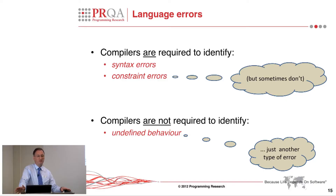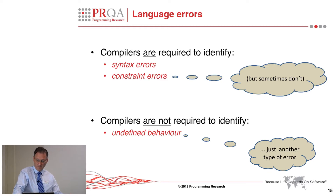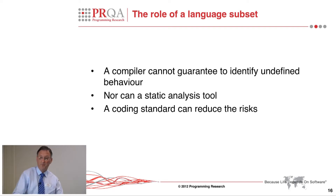The thing about undefined behaviour, of course, is that it is very much an error — it's very much a fault, just as Randy has said, as a syntax or constraint error. It's just a fault which isn't particularly defined in the language. It's a gap. A compiler cannot guarantee to identify it, nor can a static analysis tool, however good. Sometimes undefined behaviour can be detected, but not always. And the whole point about a coding standard is that it reduces the risk of undefined behaviour. That is one of the big roles of a coding standard — not to describe undefined behaviour, but to protect you against it.